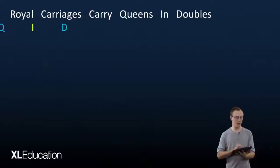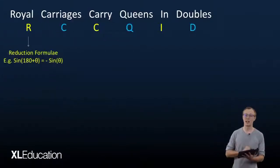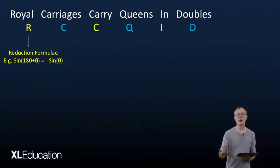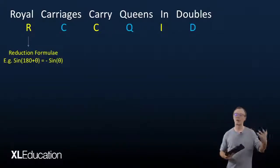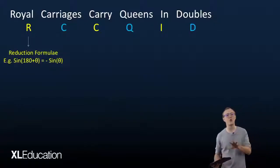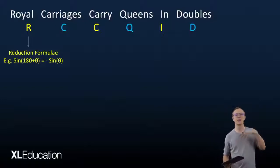So royal stands for our reduction formulae. So if you have something like angle 180 plus theta, 180 minus theta, or 360 minus theta, you can always turn that into an angle that is in quadrant one and that is simpler to work with.